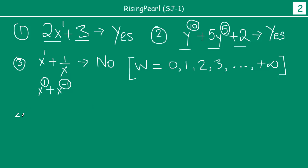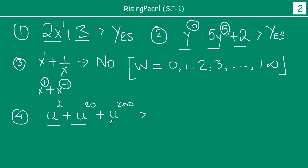So let us take a few more examples. Fourth example: how about u to the power 2 plus u to the power 20 plus u to the power 200. Now is this a polynomial? Well, we have three terms in this expression. The first term is raised to power 2 which is a whole number. Second term is raised to power 20 which is a whole number. Third term is raised to power 200 which is a whole number. So yes, this is again an example of a polynomial.